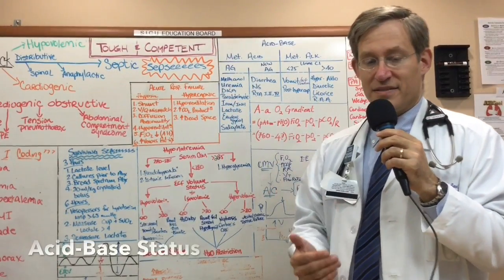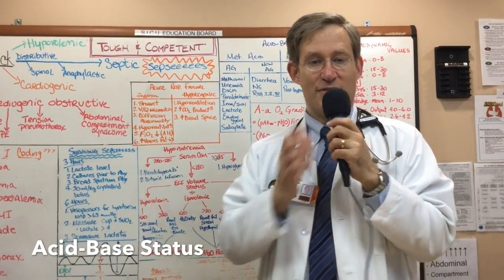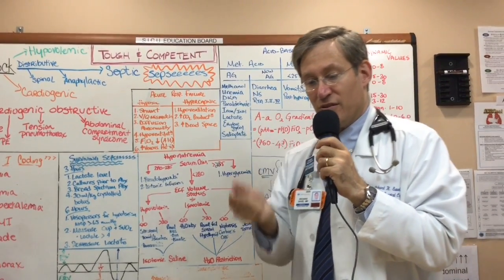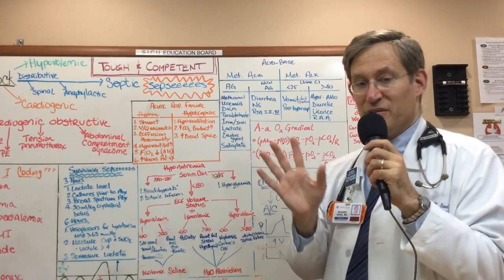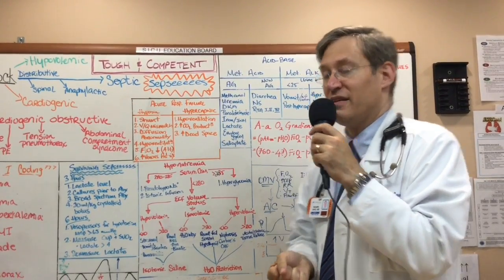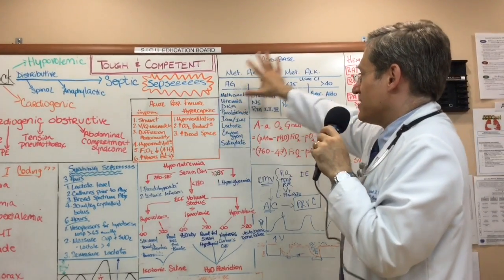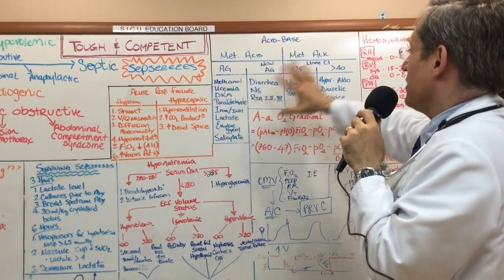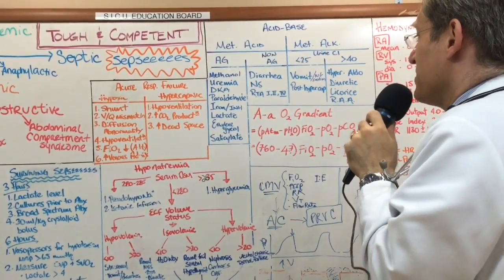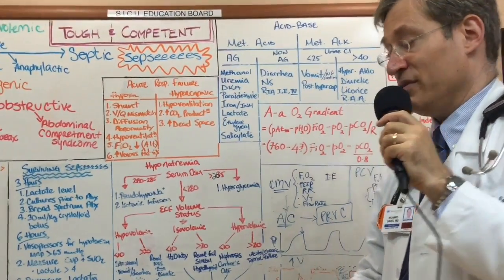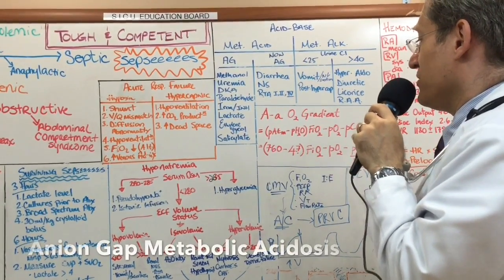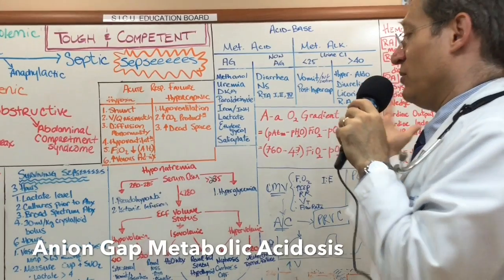Now on acid-base status in the intensive care unit — it's very important to have a fundamental understanding of this to make real-life decisions. We break things down into metabolic acidosis and metabolic alkalosis. Starting with metabolic acidosis: you must calculate the anion gap. If the anion gap is elevated, the differential diagnosis is MUDPILES — Methanol, Uremia, Diabetic ketoacidosis, Pyraldehyde, Iron or INH, Lactate, Ethylene glycol.